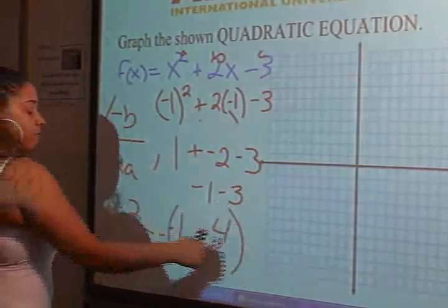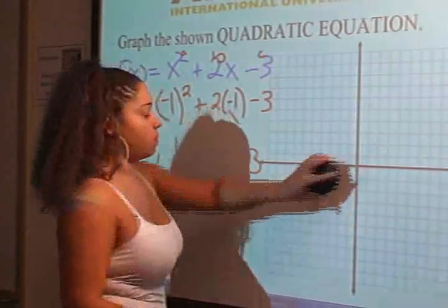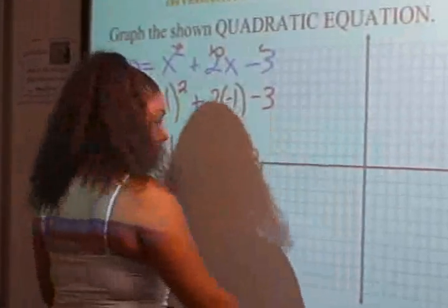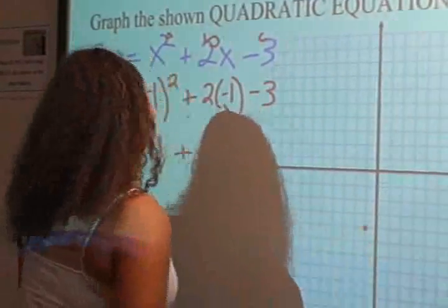So, we found our vertex. So let's go over here and go negative 1. Negative 1 down 4. Our vertex point is right there.